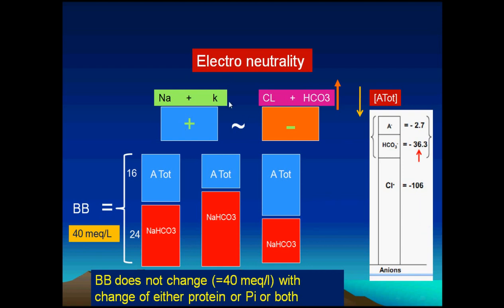To summarize: increase in potassium is associated with a decrease in sodium; decrease in potassium is associated with an increase in sodium. The same applies for chloride — decrease in bicarbonate is associated with an increase in chloride, and decrease in chloride is associated with an increase in bicarbonate. These changes usually happen through the gastrointestinal tract, the kidneys, or through cells.